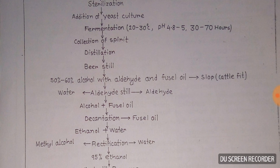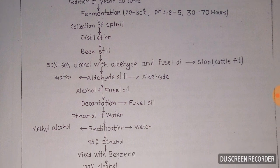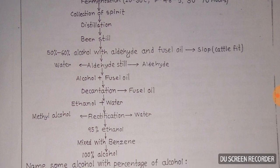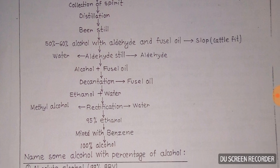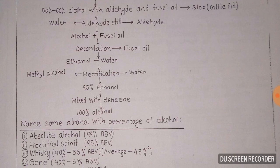The fusel oil slope is used as cattle feed. Water and aldehydes are removed, leaving alcohol plus fusel oil. The next step is decantation of fusel oil, yielding ethanol with water. Methyl alcohol is then added under rectification.